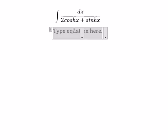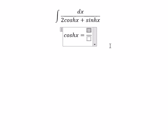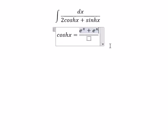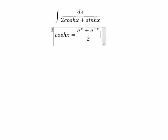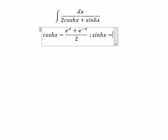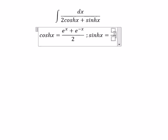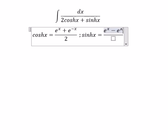We know that cos s equals e to the power of s plus e to the power of negative s, all over 2. Next, we have sin s equals e to the power of s minus e to the power of negative s, all over 2.